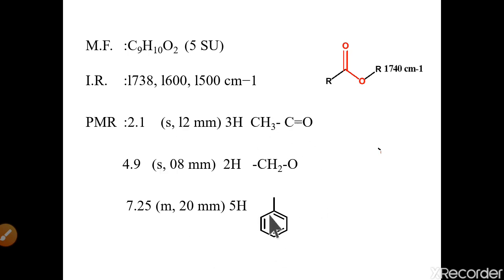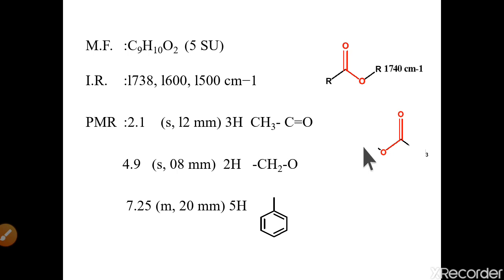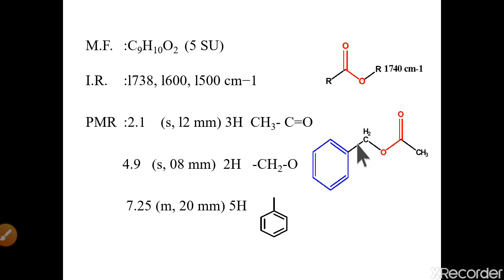We have the ester functional group confirmed. The CH3 is attached to the carbonyl side of the ester. There is also a CH2 attached to the oxygen. Since one valence of CH2 is still incomplete, we attach the benzene ring to the CH2. This gives us our final molecule — a benzene ring attached via CH2 to the oxygen of an acetate ester.